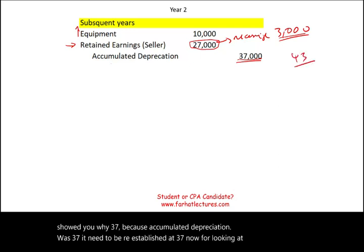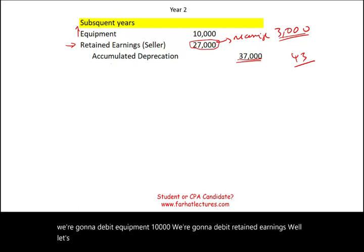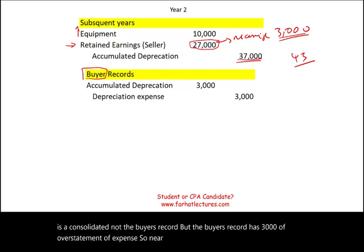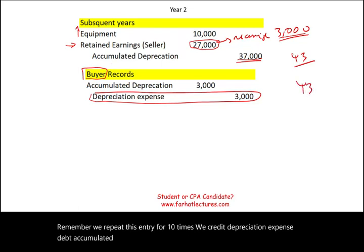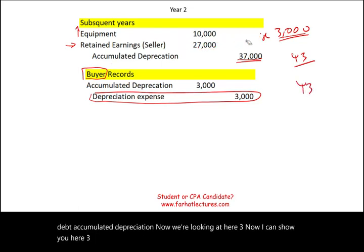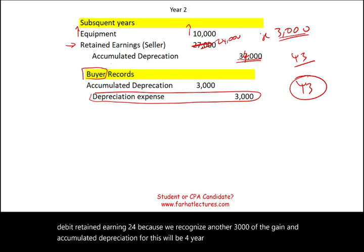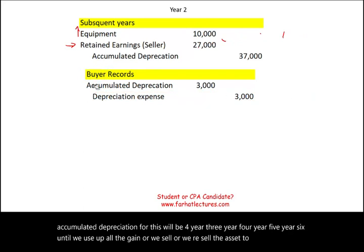In year three, we debit equipment $10,000 and debit retained earnings $24,000 — another $3,000 of the gain recognized. This pattern continues through year four, five, six, and so on until we use up all the gain or we sell the asset to an outside party. This is how we chip away at the $30,000 gain over the 10-year life.